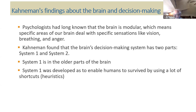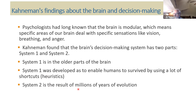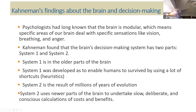They developed these shortcuts of thinking — all of a sudden they'd see something and think 'danger, I better get out of here.' System 2 is the result of millions of years of evolution. In System 2, they use the newer parts of the brain to undertake slow, deliberate, conscious calculations of cost and benefits — cost-benefit analysis, which is the cornerstone of traditional economics. But Kahneman said 95% of your brain is System 1.